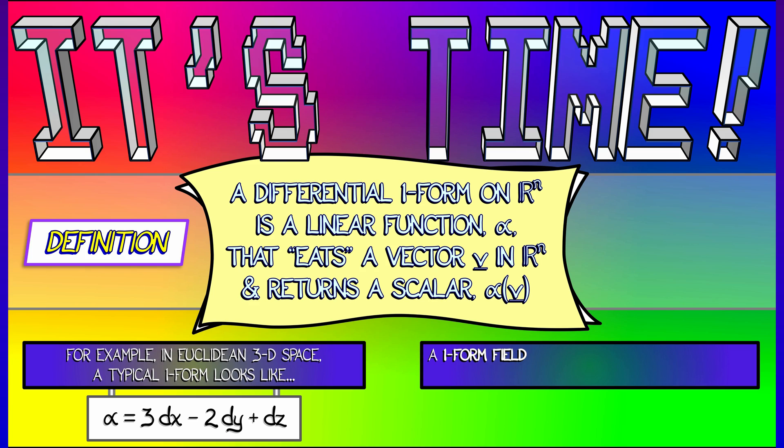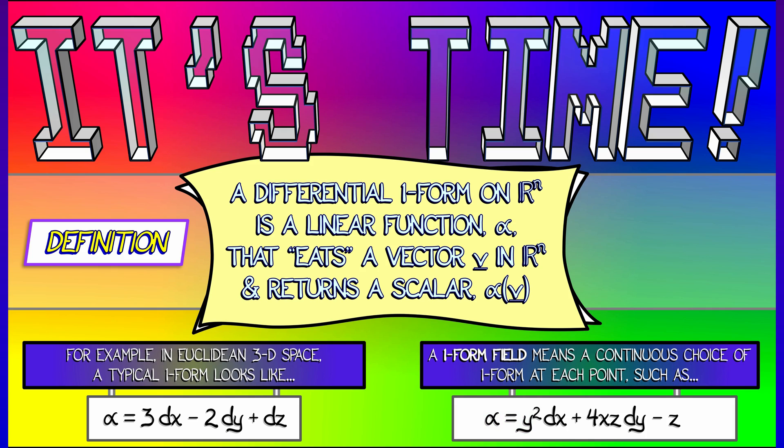Now a one form field is going to mean that we have a one form at every single point in space. That means that instead of scalars in front of dx, dy, and dz, you have functions. Something like y squared dx plus 4xz dy minus z dz. Now that's going to correspond to the case of a vector field f with components y squared, 4xz, and minus z. This is going to be the one form field associated to it.